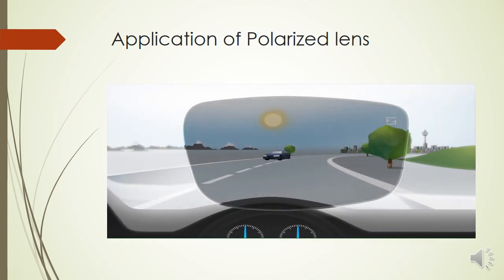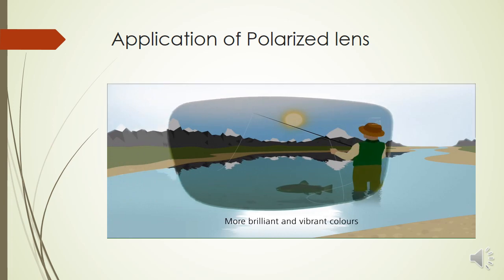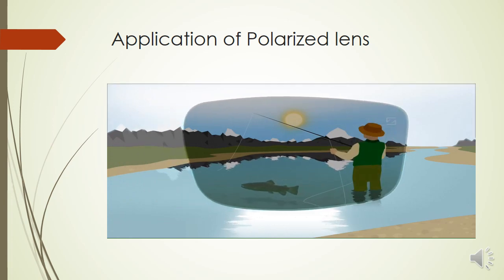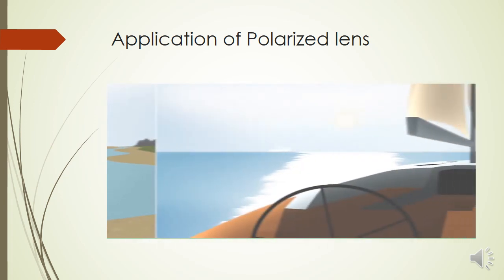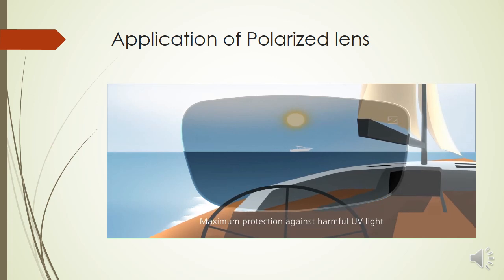They obstruct this particular ray and give you only the visible light which is required to see things clearly. Because of which the surface reflection which was coming, or the polarized light which was coming off the surface, gets cancelled off and you get a better image or a clearer image with less glare.